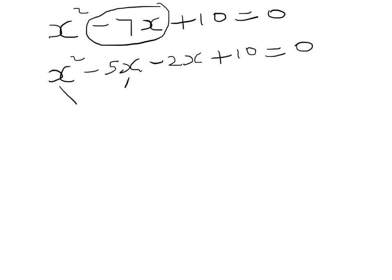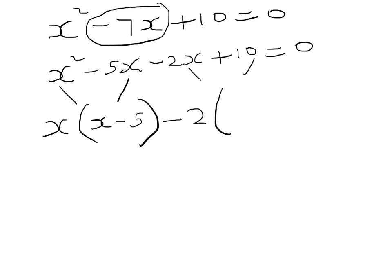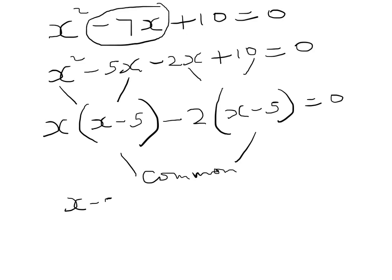We pair the first two terms and find that x is common. We write x open bracket x minus 5, close bracket. The other factor is x minus 2, close bracket. We equate to zero.